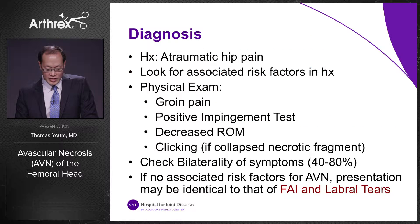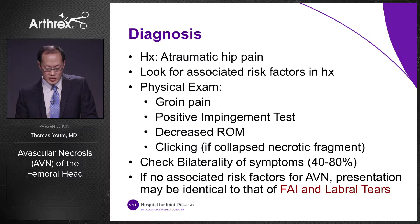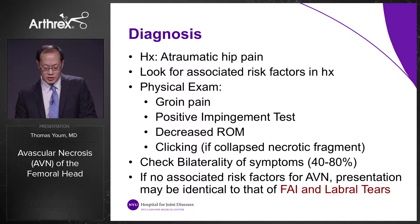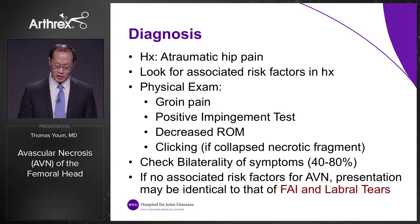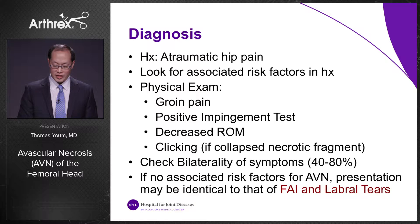To diagnose avascular necrosis: the history is typically atraumatic hip pain with associated risk factors such as steroid use. On physical exam you may find groin pain, positive impingement test, decreased range of motion, and possibly clicking in the hip, especially if there is a collapsed necrotic fragment. You should check for bilaterality — in 40 to 80 percent of cases, AVN occurs in both hips. If there are no associated risk factors, the presentation may be identical to that of femoral acetabular impingement and labral tears.